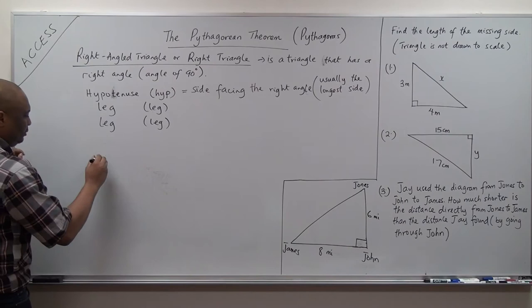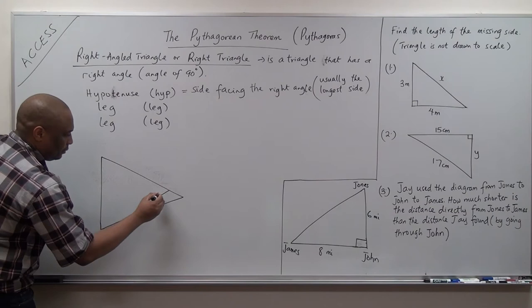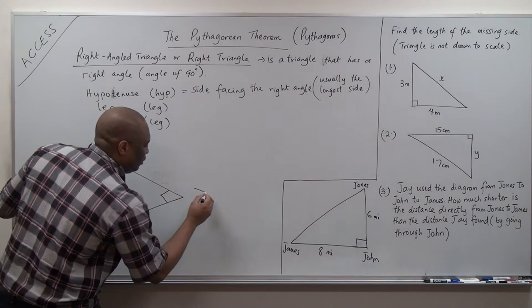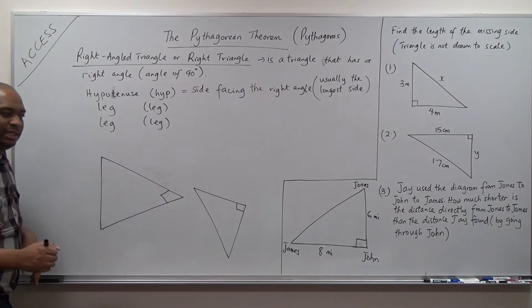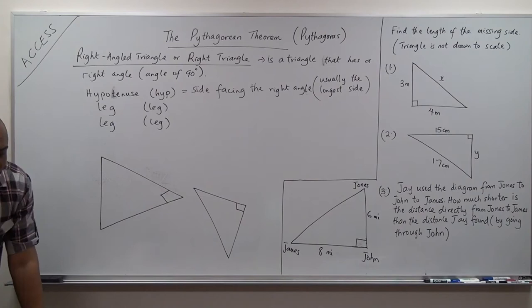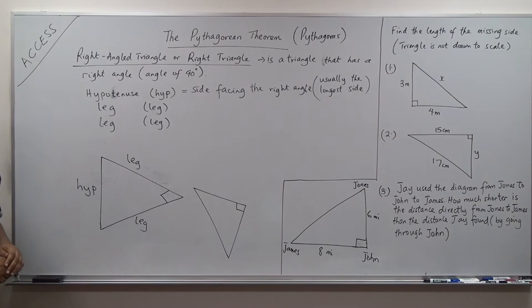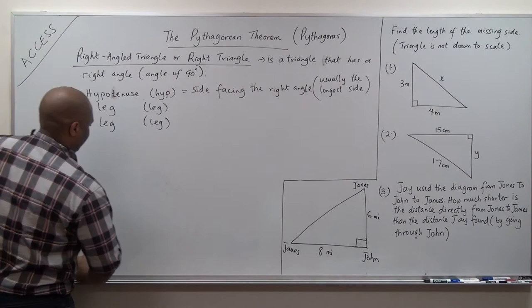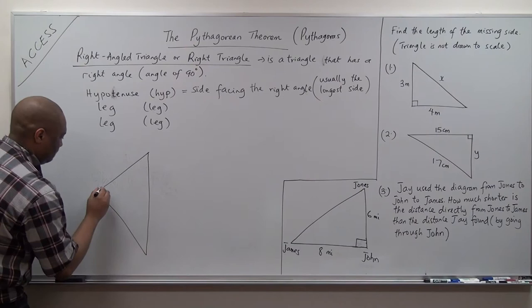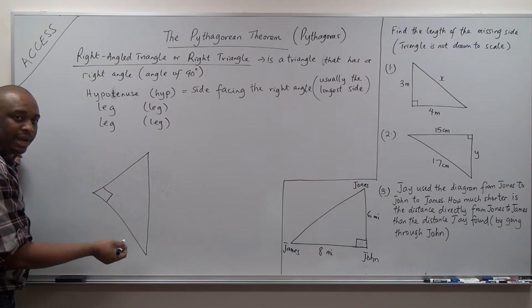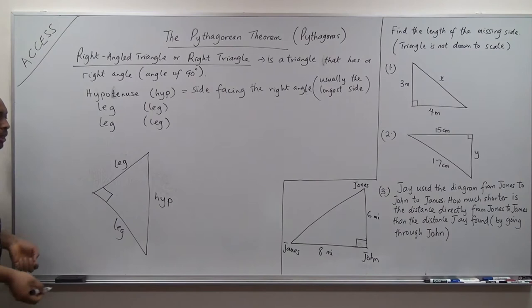No matter how the triangle is drawn, it is not your worry to say 'he didn't draw it well.' We are not doing measurements here. What should be your concern is the right angle. This is the hypotenuse, this is the leg, and this is the leg — regardless of orientation.